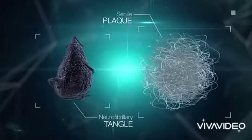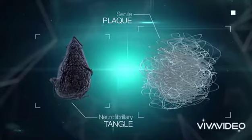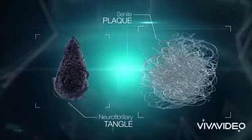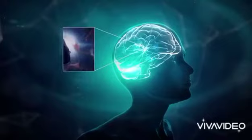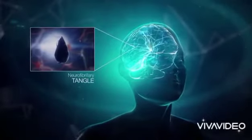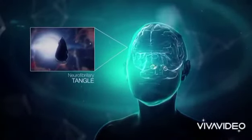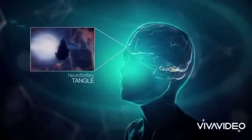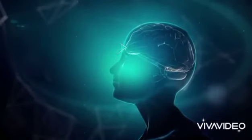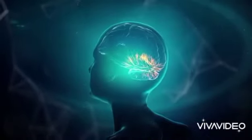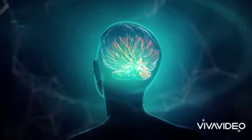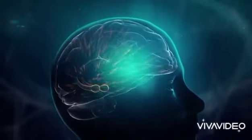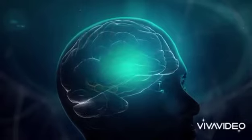Neurofibrillary tangles and senile plaques do not follow the same pathway in the brain over time. Neurofibrillary tangles first develop in a region called the hippocampus, which is essential to memory and learning. They then reach the whole brain following a centripetal movement. The process causes atrophy, which hinders global cognitive functioning.